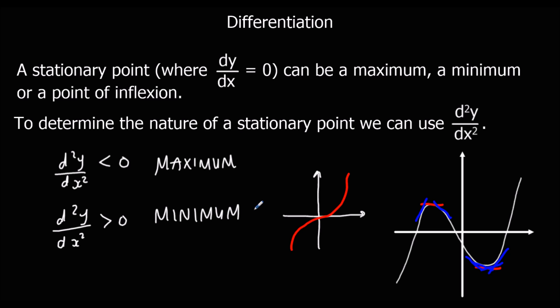And if the gradient of the gradient is zero, that means we don't actually know — it could be a maximum, a minimum, or a point of inflection. So: if d²y/dx² is negative, we have a maximum; if d²y/dx² is positive, we have a minimum. We can use this to work out the nature of a stationary point.